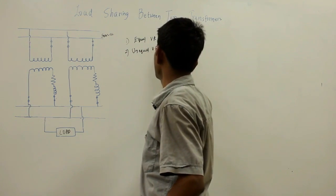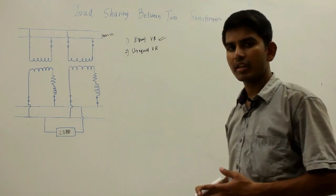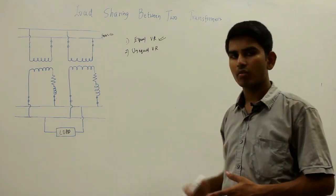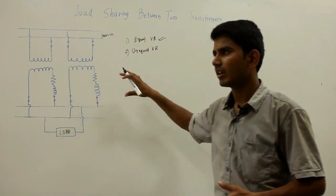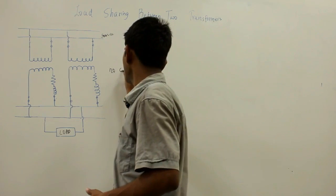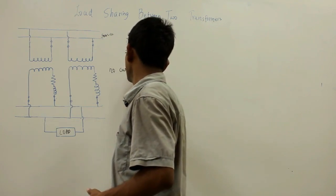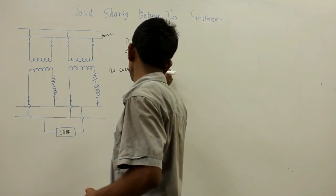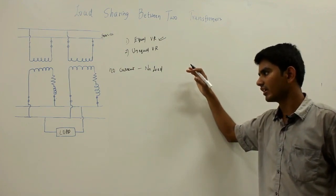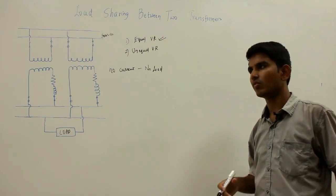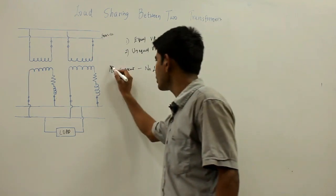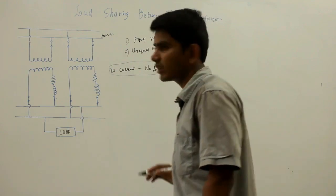Let us first discuss the equal voltage ratio case. If the two transformers have equal voltage ratio and voltages are in phase, then the primary side and secondary side can be connected to operate in parallel, and no current will flow during the no-load condition. If they are on an unequal voltage ratio, they will have a large circulating current in the secondary and primary sides, and that current will be very high compared to the no-load current as the leakage impedance on load decreases, giving a high value of circulating current. With equal voltage ratio, there is no circulating current at no load.